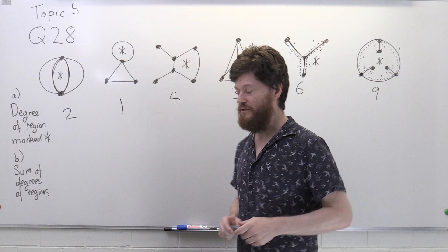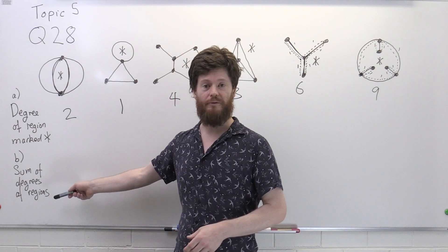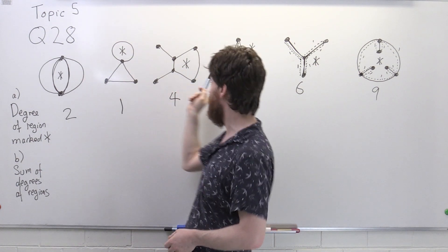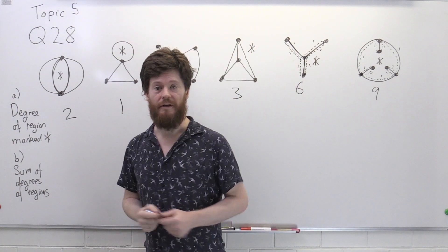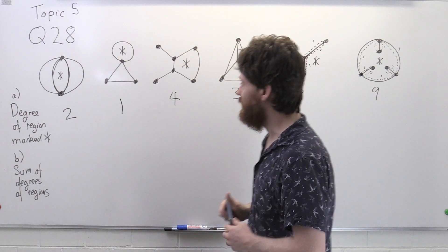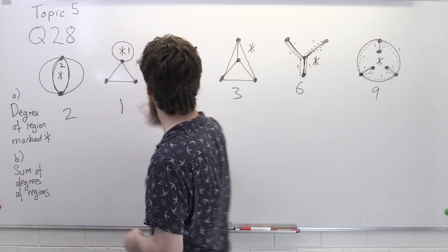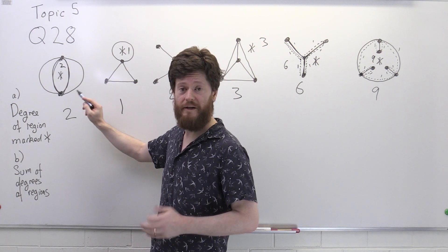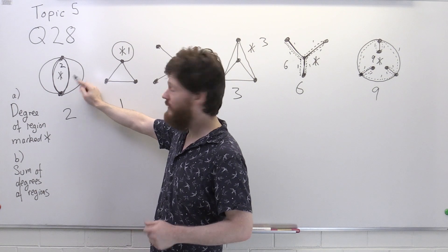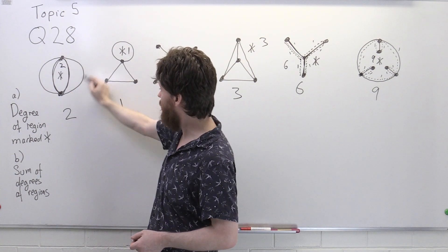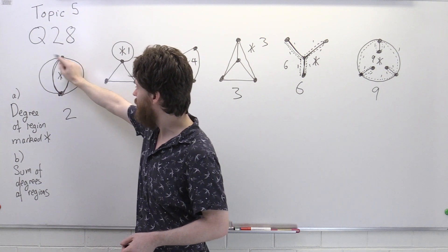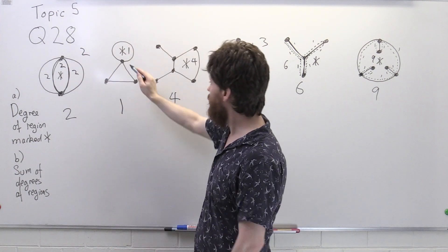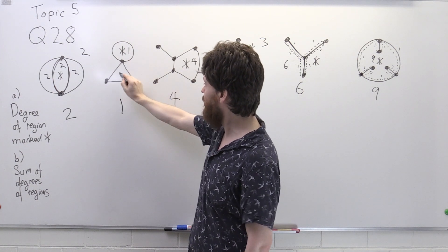The second part of the question asks us to find the sum of the degrees of the regions. I'll label the regions we already found: degrees two, one, four, three, six, and nine. For the first graph, each of its three regions has degree two, so the sum is two plus two plus two plus two — that's eight.